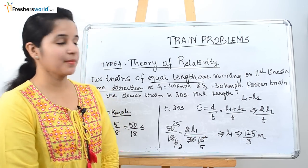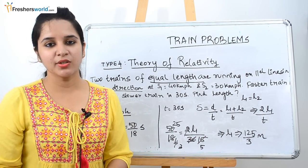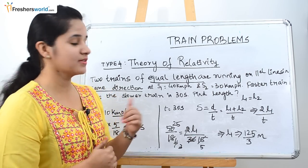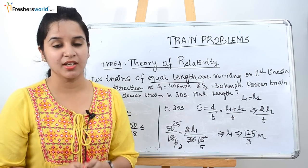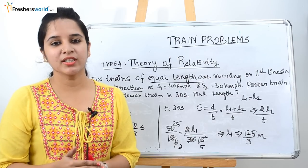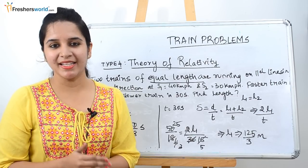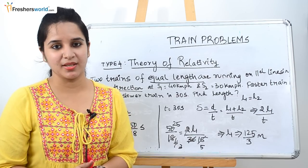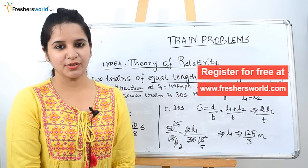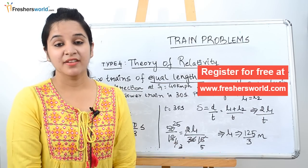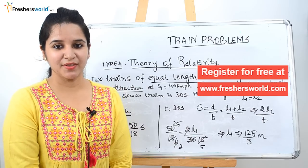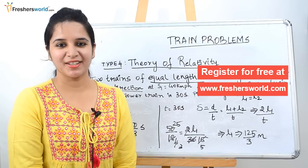This is the fourth type in train problems. In the previous video we covered three types, and this is the fourth one — the theory of relativity. If you are thorough with all four types, there is nothing more they can ask in any train problems in any aptitude exam. If you are looking for a job, kindly register on freshersworld.com. We are coming up with a lot of interesting aptitude sessions. Kindly like this video and subscribe to our YouTube channel. Thank you.